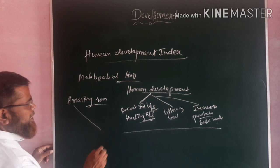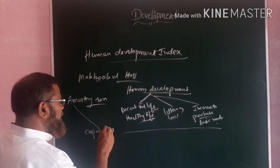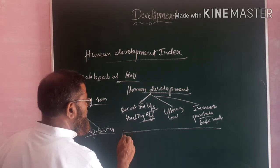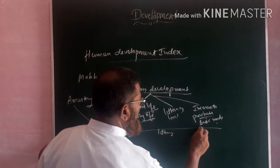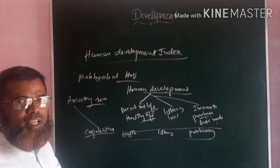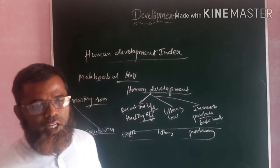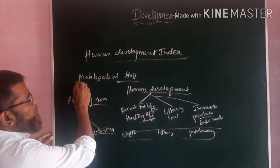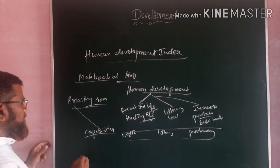Similarly, Amartya Sen talks about capabilities. According to him, in a country the people should have the capability or ability to have good health, literacy, and purchasing power. If they are having these capabilities or abilities, we can measure the development of a particular country. The same ideas put forward by Mahabubul Haq and Amartya Sen were taken into consideration by the UNDP — the United Nations Development Programme.